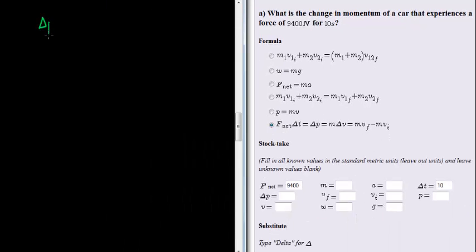We know that we want the change in momentum, that's asked, of a car that experiences a force, so net force we presume is 9400 Newtons, for 10 seconds. So that's the change in time, delta T is equal to 10 seconds.